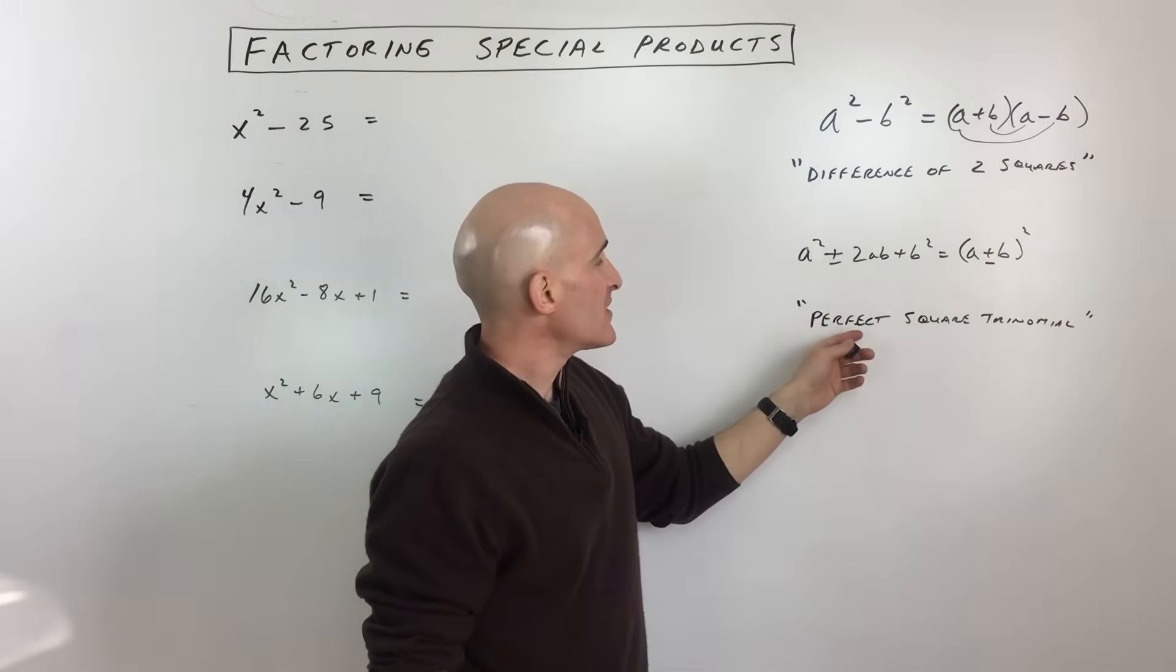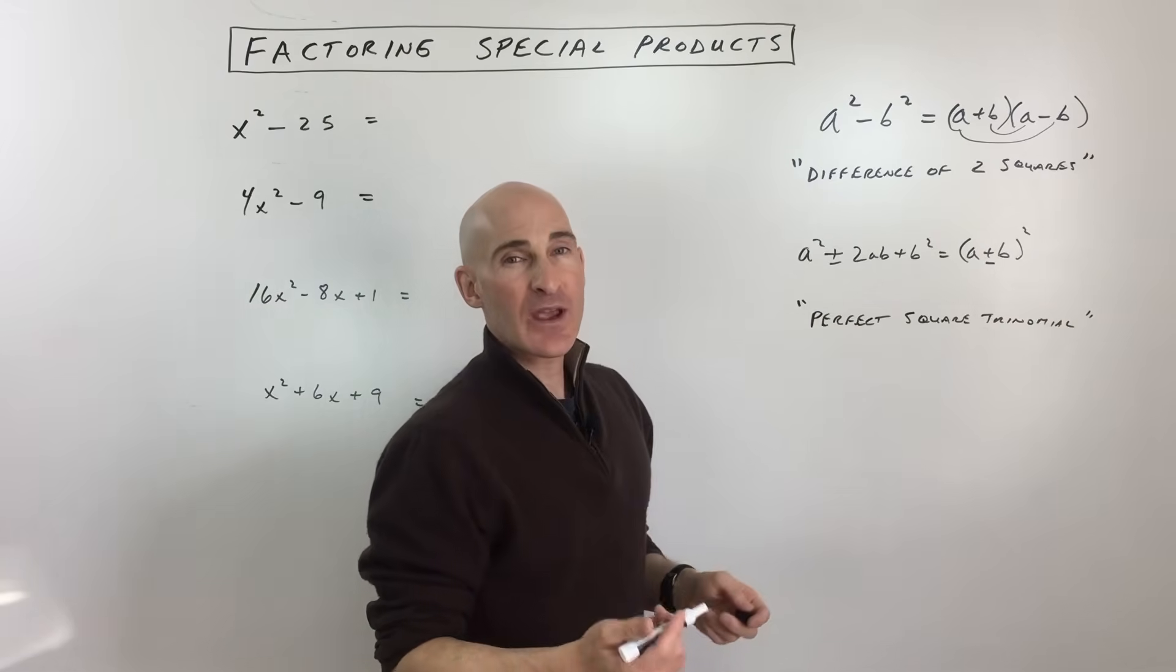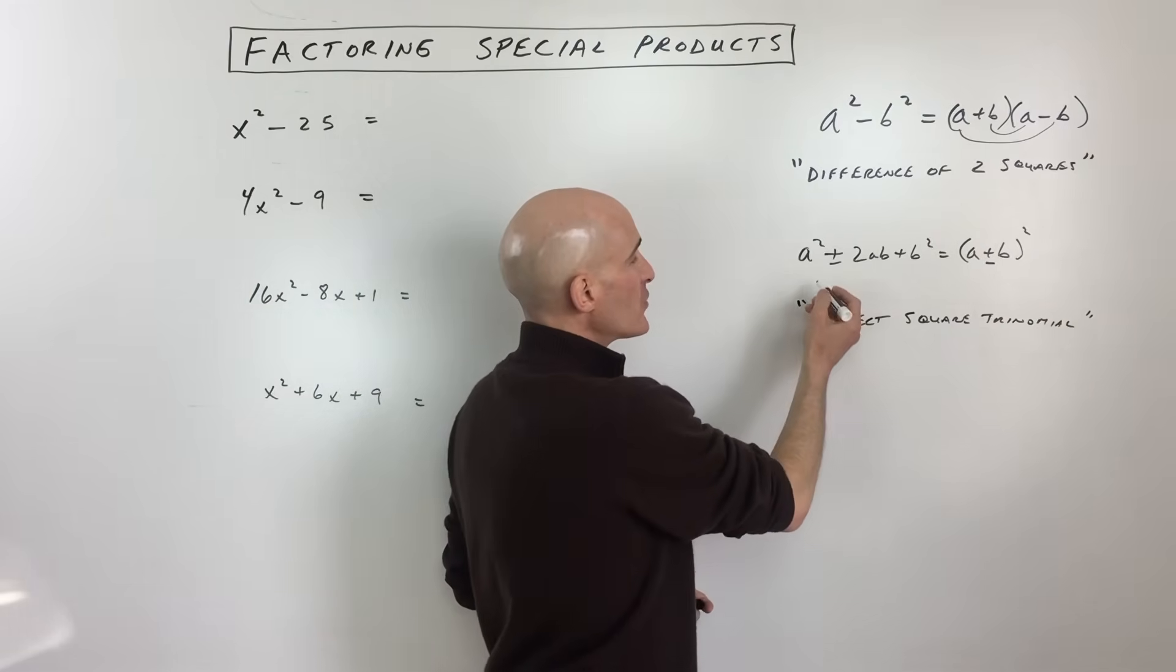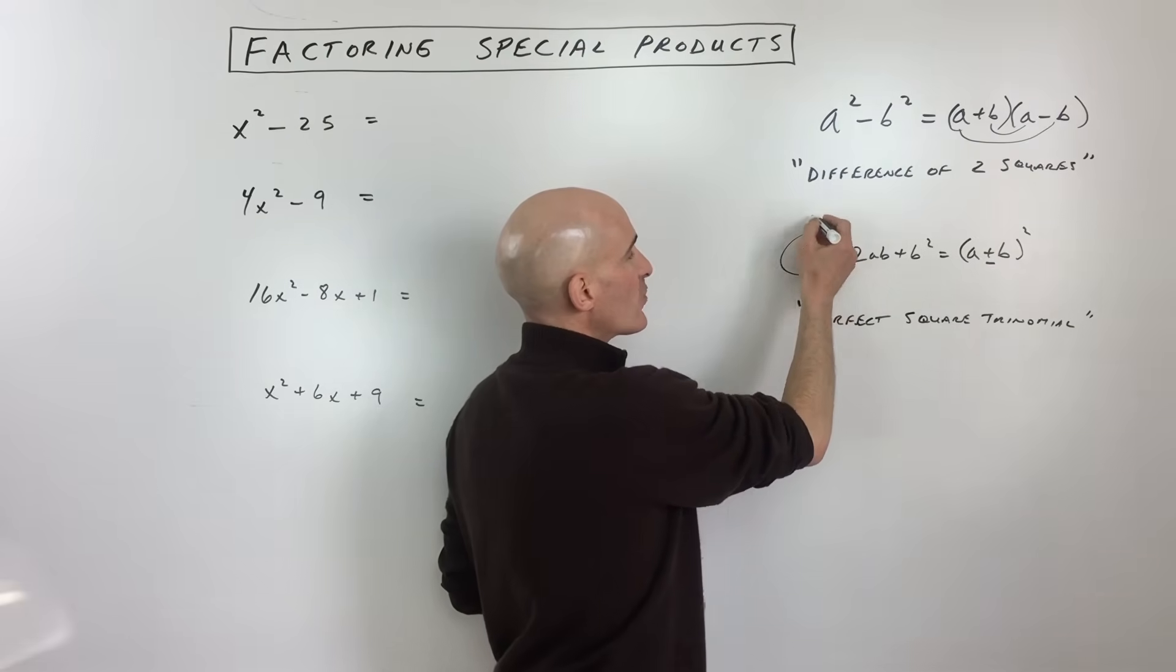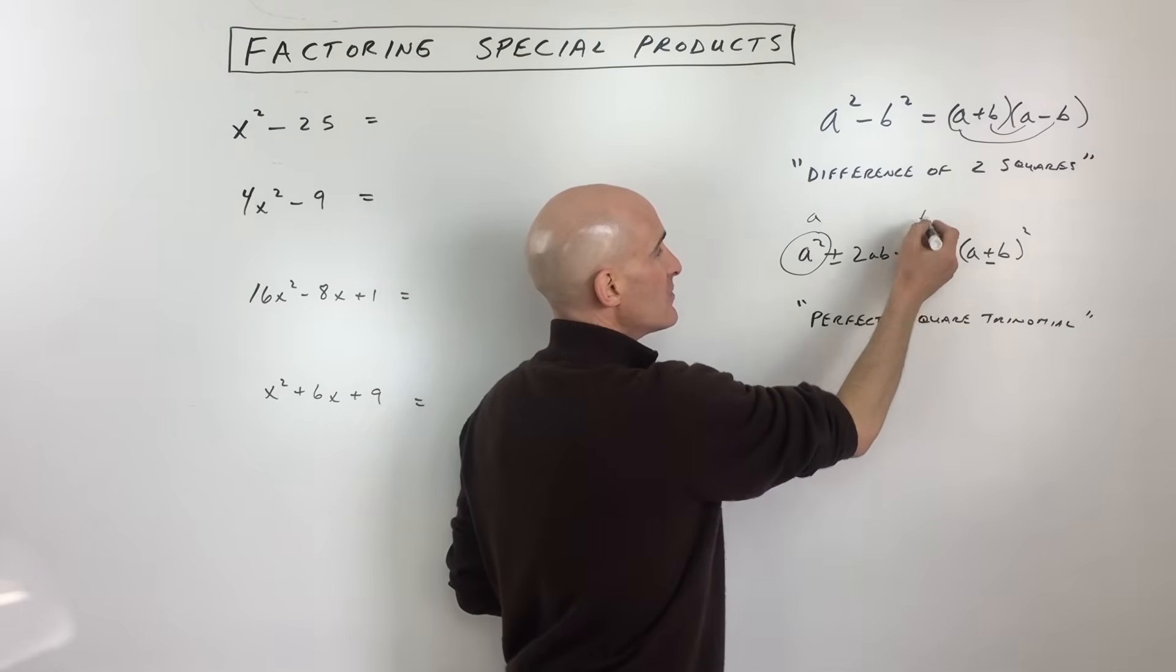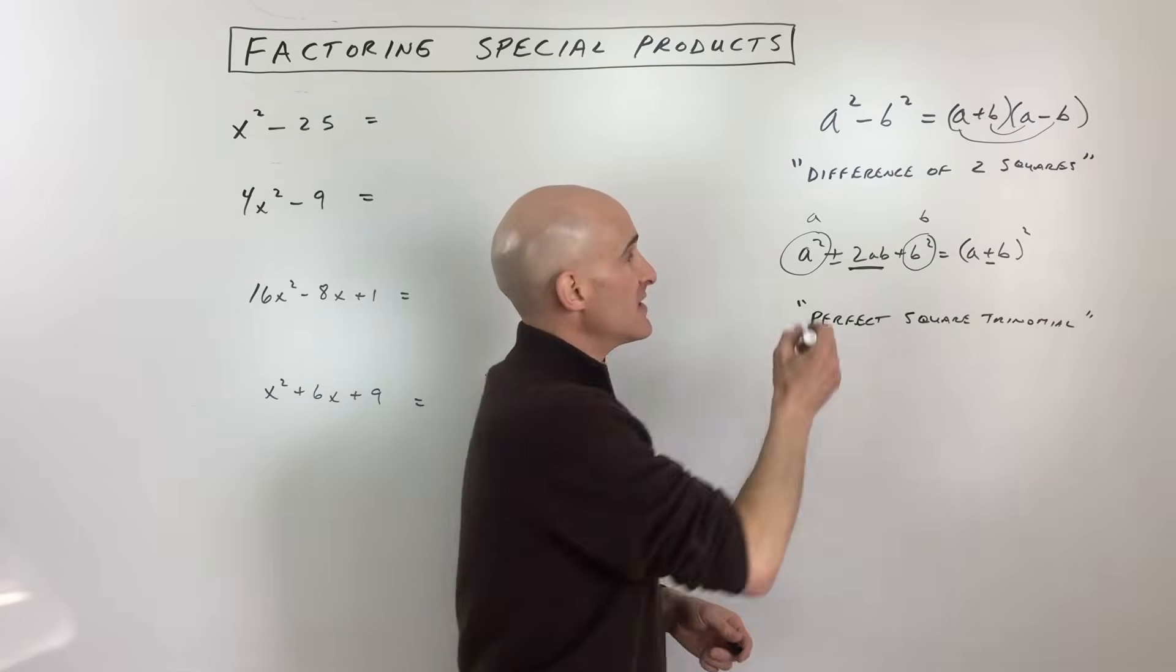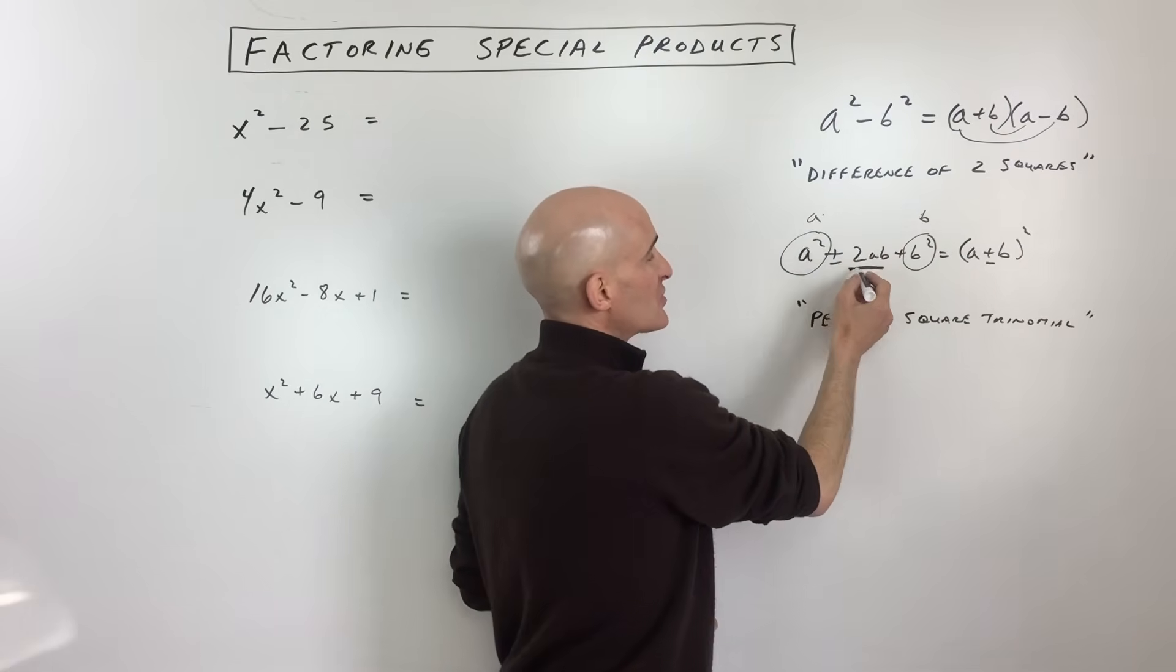The second one we're dealing with is the perfect square trinomial. The way to recognize perfect square trinomials is that this is a perfect square because a times itself is a², and this is a perfect square because b times itself is b². What you're checking is that the middle term is a times b times 2.